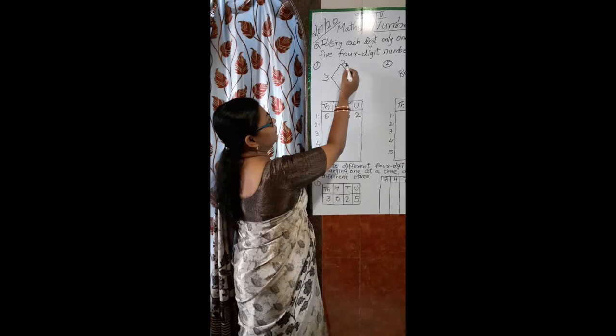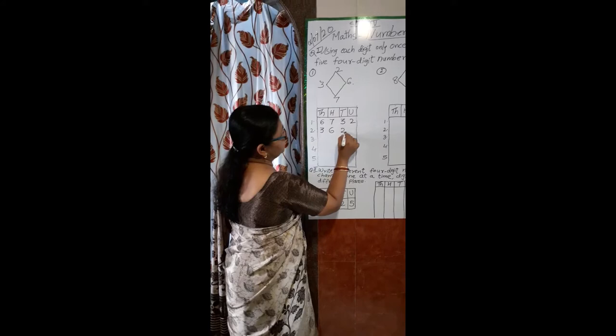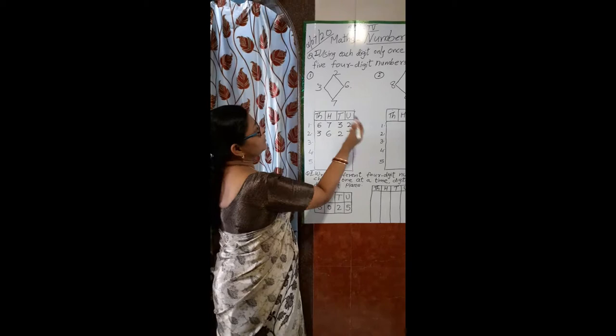Next, we'll use a different number in the thousands place. If I take 3 in the thousands place, 6 in the hundreds place, 2 in the tens place, and 7 in the units place, we are going to read this number as 3627.